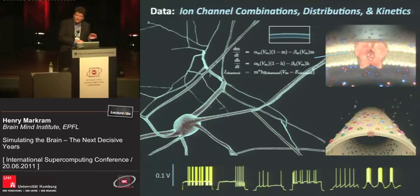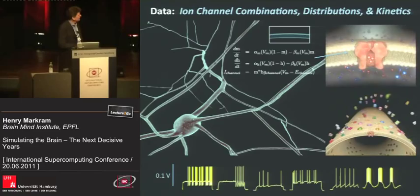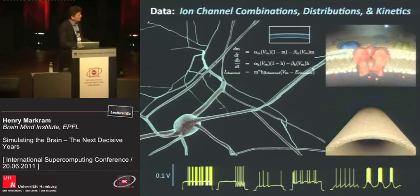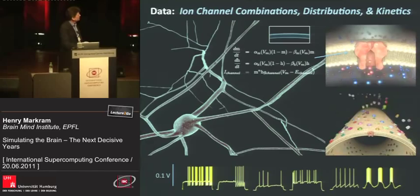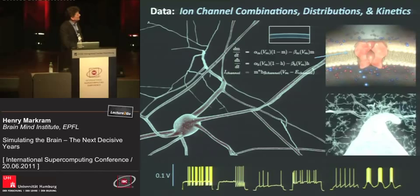These can be described by equations that were invented some time ago. In fact, two Nobel Prizes were awarded for this discovery. So it is possible to actually derive the combinations, get the distributions, and find out the kinetics biologically through measurements.